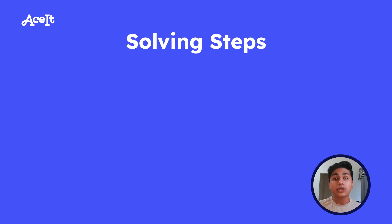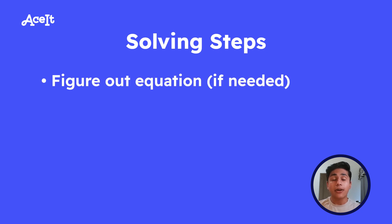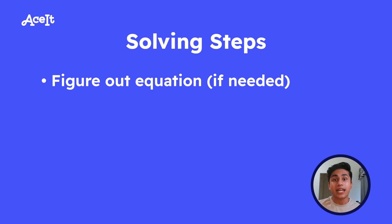Let's quickly recap the solving steps for a one variable linear equation. First, figure out the equation you're working with. In the examples I showed you, we were given the equation directly. But that's not always the case on the SAT — sometimes it'll be presented in a word problem and you have to figure out the equation based on what the problem says.